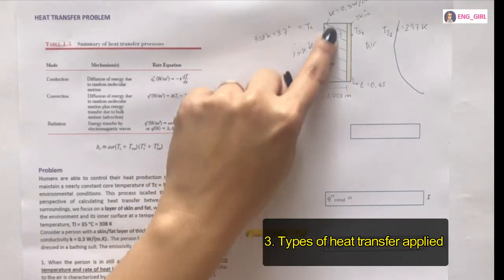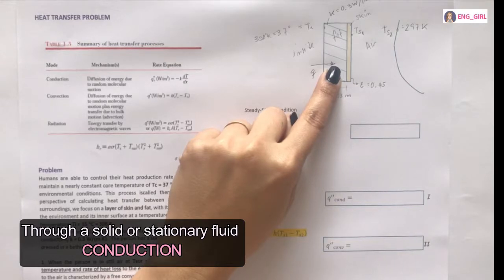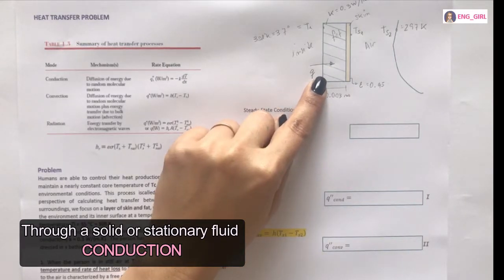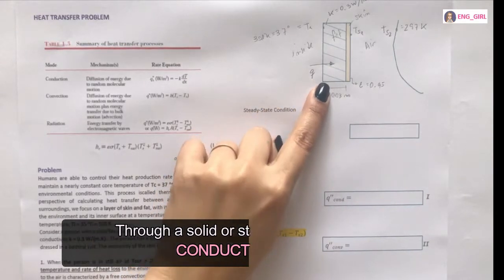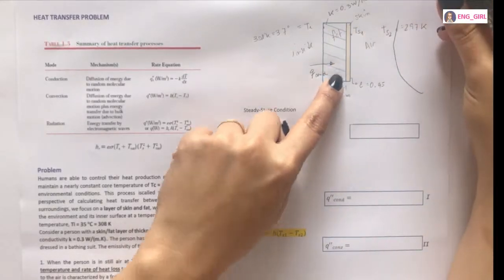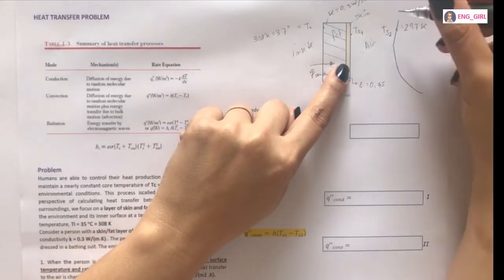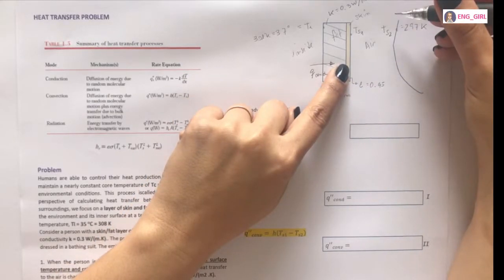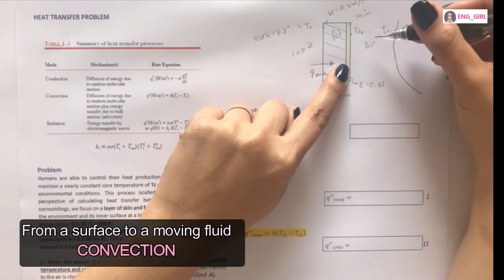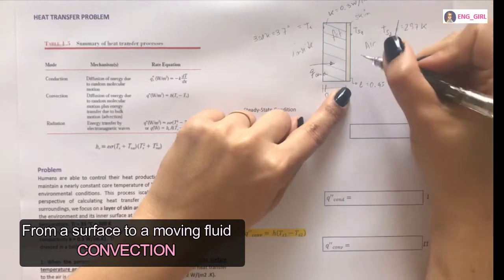Here, we have a solid or stationary fluid. So, it's a conduction transfer condition. Ok? When the heat arrives here, it emits into air. What's air? A moving fluid. When you have this condition, the heat transfer is convection.